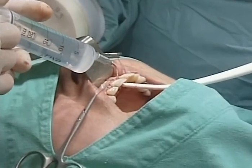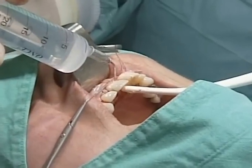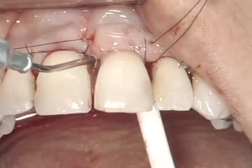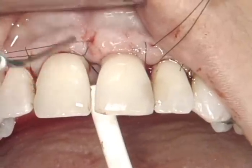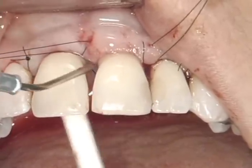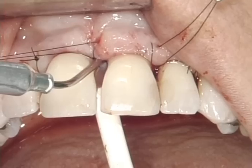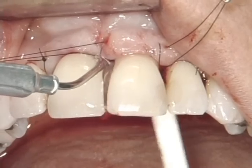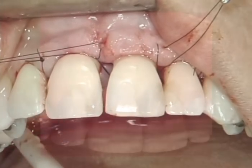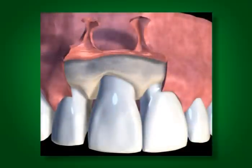Excess PREF gel flows out at the edge of the gingiva. After two minutes, the site is rinsed again with sterile saline solution. All contact with blood, or especially saliva on the root surface, should be avoided. Less experienced surgeons can perform a larger flap opening, as shown in this graphic, which can help to better protect the root surface from contamination.